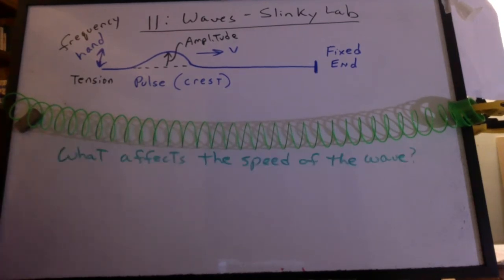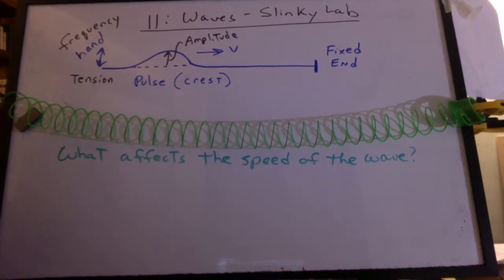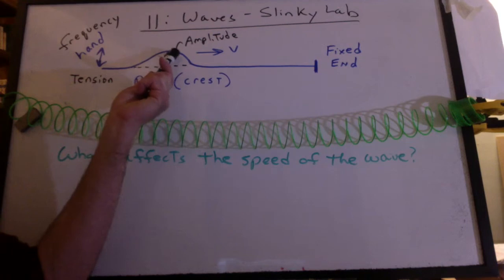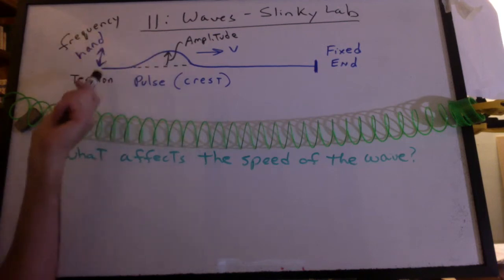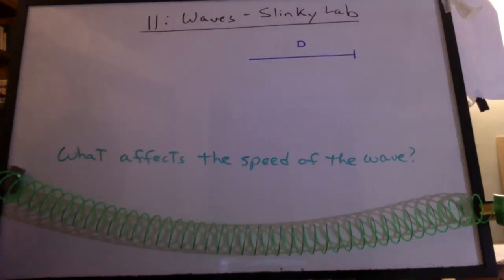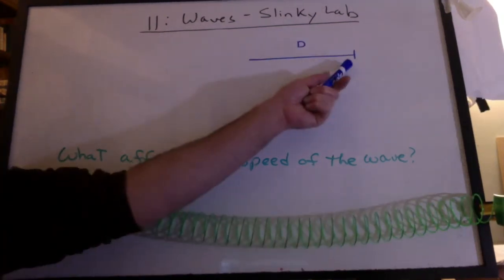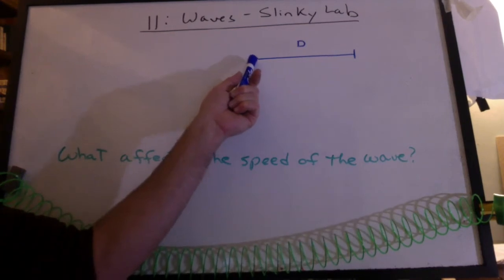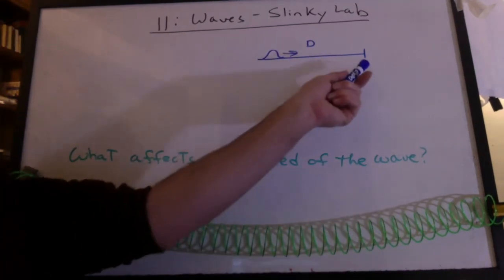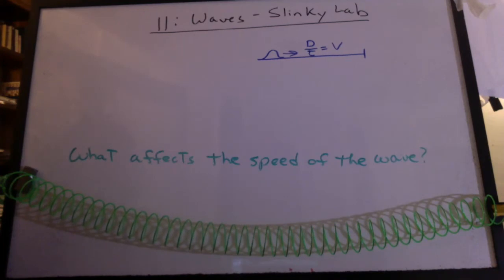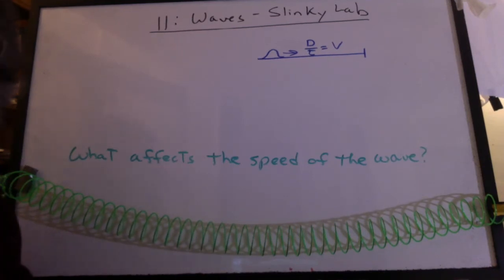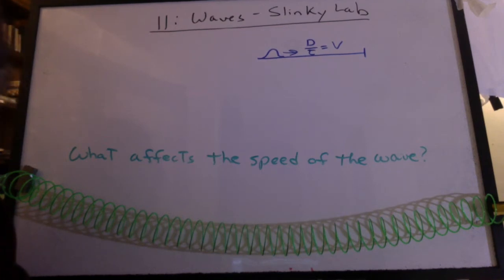The question for this part of the lab is what affects the speed of the wave? We can change the amplitude, frequency, or tension. Let's start with tension. We start by pulling the slinky this far, make a pulse, and time it to go down. We can measure the velocity. You can get good results by watching the video we posted from class, or make your own video, count the frames, get good data.